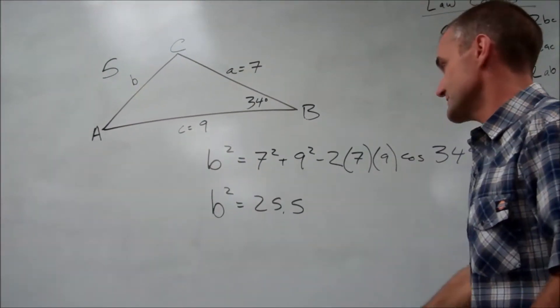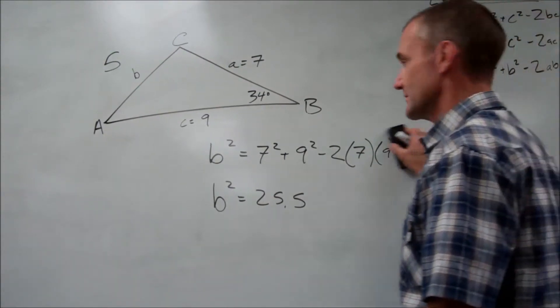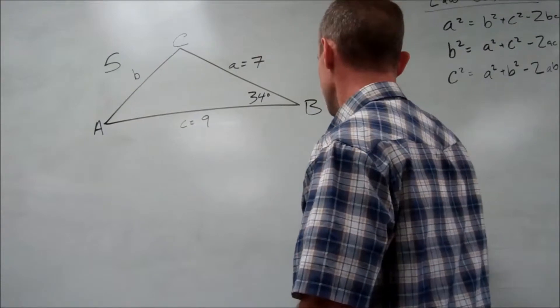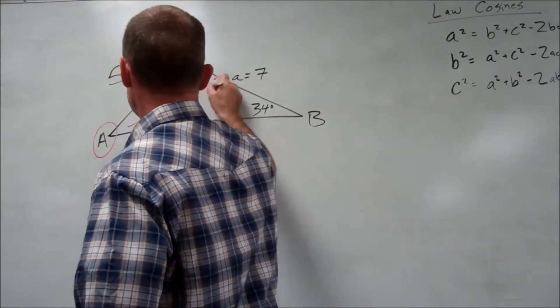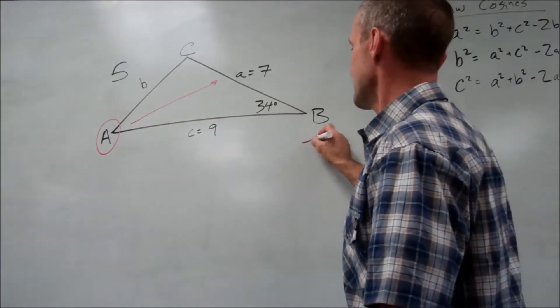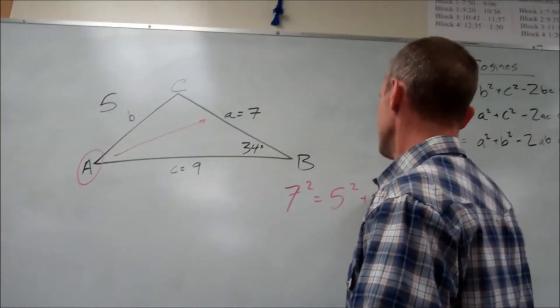So now I want to find angle A. I'm still going to use the law of cosines. Can I erase this part? I'm going to use the law of cosines to find angle A. So if I'm looking for angle A, I'm going to take the side opposite it.